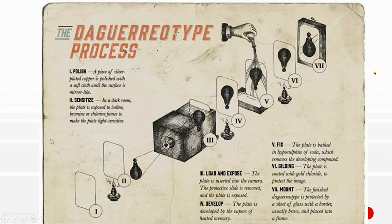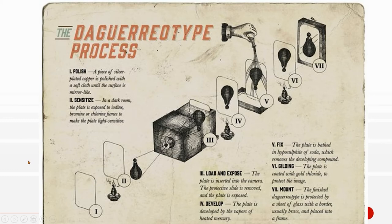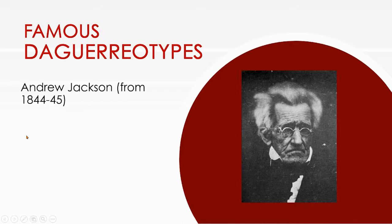In the daguerreotype process, they had a piece of metal coated with silver, making sure it was smooth and straight. They would expose it and then put chemicals on it to bring out the image. It was a big process involving a lot of dangerous chemicals, but we still have many daguerreotypes around, providing a lot of cultural transmission.